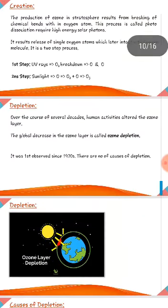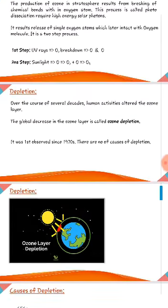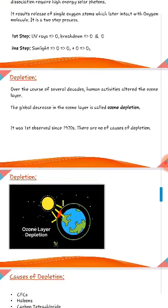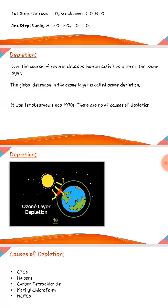There are two steps in ozone formation. In the first step, UV rays break down oxygen molecules. After that, we discuss depletion — over the course of several decades, human activities have altered the ozone layer.